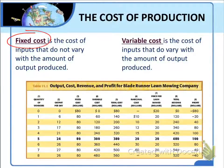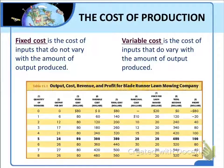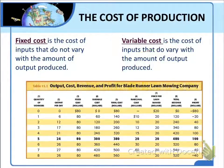In the long run, when the quantity of all inputs is variable, there is no fixed cost. Firms can spend more or less on buildings, equipment, licenses, and other inputs to best suit their level of production. Variable cost, however, is the cost of a firm's variable inputs. Variable cost changes with the number of units of output produced. Typical sources of variable cost include payments for wages, electricity, and raw materials.